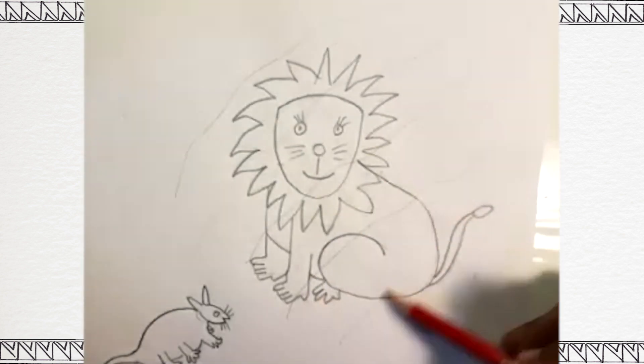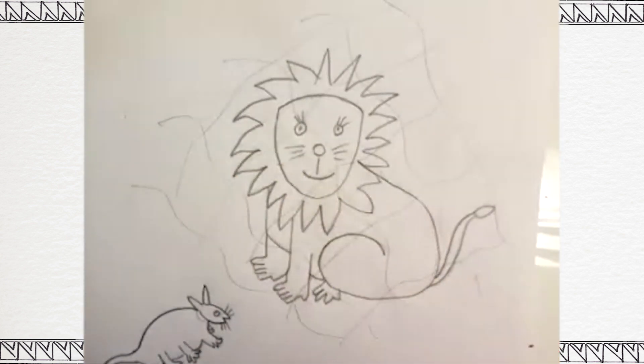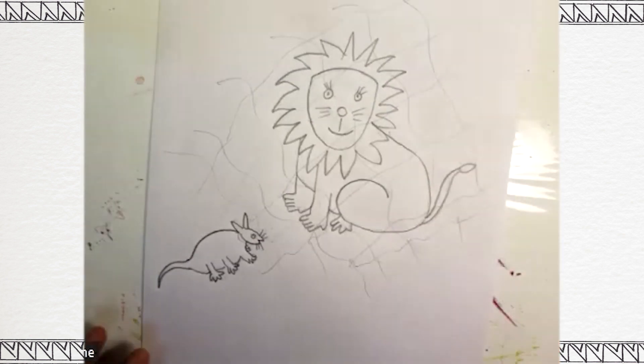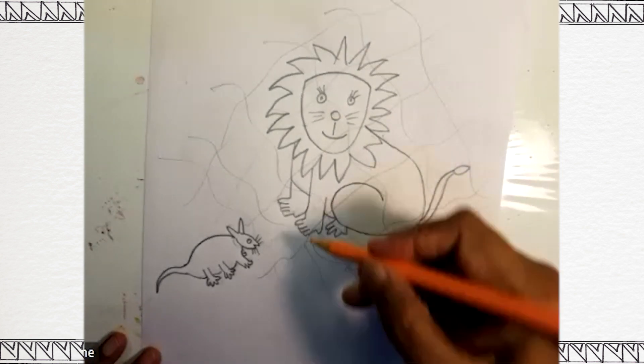So this is the net of lion in which lion got trapped. Now we are going to color our painting. Let's color.